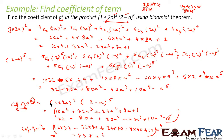We wrote the first in descending order and the second in ascending order of powers of a — though you can do it the other way around too. We then multiplied only those pairs necessary to obtain a⁴, which is faster than multiplying out all terms. This makes solving the question much quicker.